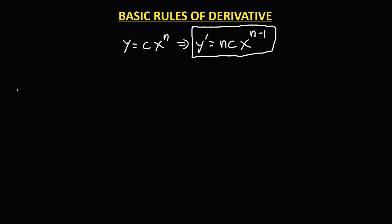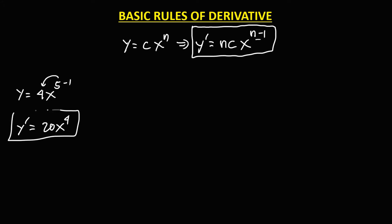So if we have y equals 4x to the power 5, to find the derivative: 5 times 4 gives 20x, then subtract 1 from the exponent — 5 minus 1 — so y prime equals 20x to the power 4.